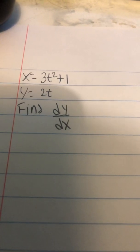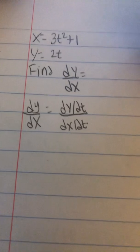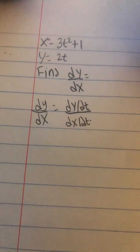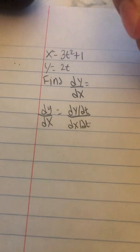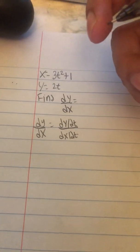So what you're going to do is you're going to use the following formula. dy dx equals dy dt over dx dt. So then, find dy dt, so the derivative of y with respect to t.